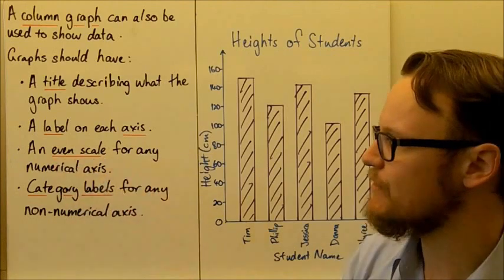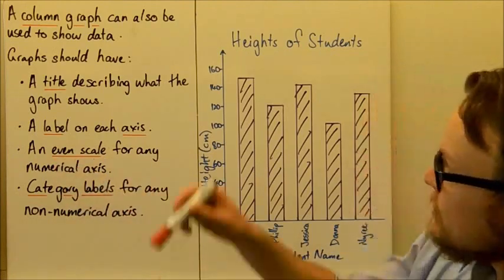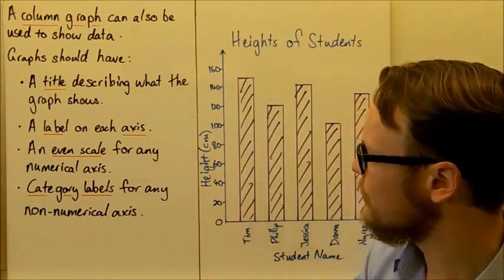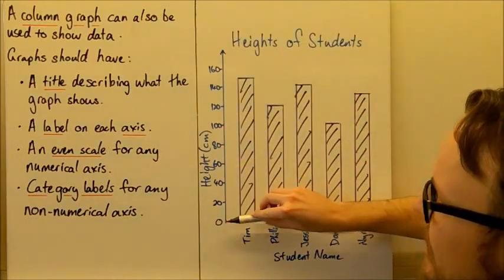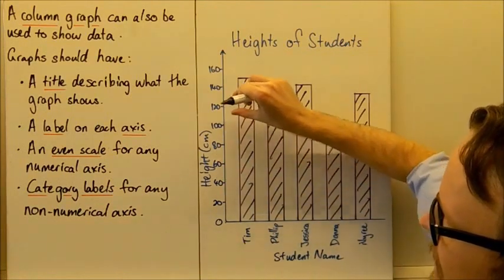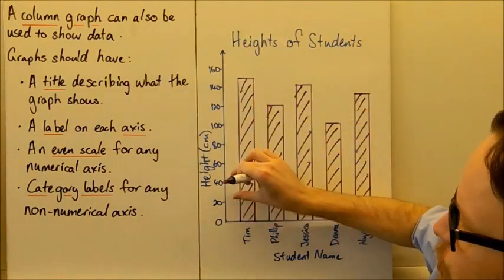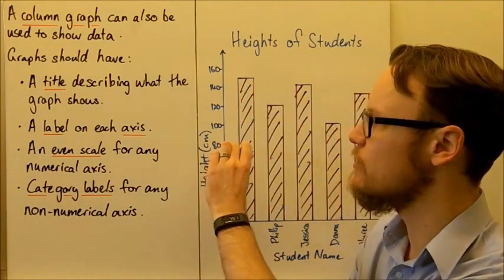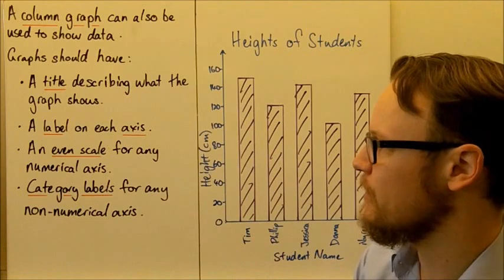We need an even scale for any numerical axis. So here we've got a numerical axis. It shows numbers, different numbers changing. So here we can see that it's an even scale. So for each different space, they're evenly spaced as they go up, and each space is worth 20 centimeters. So we've got a nice even scale as we move up that numerical axis.